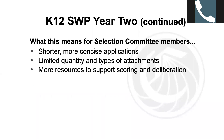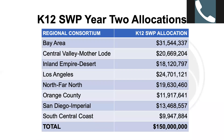What this means for selection committees is shorter, more concise applications, limited in the number and types of attachments — we really tried to pare down what we are asking you to review. And of course, we are providing more resources in scoring and deliberation to support that effort. Year two allocations are on the screen for you to review by region, and the eight teams will be distributing the amounts listed on the chart.